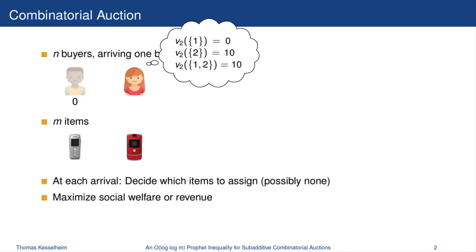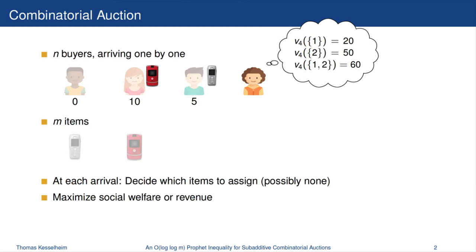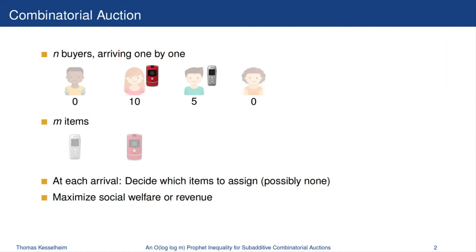This second lady has a value of 0 for the first item, a value of 10 for the second item, and also a value of 10 for both items together. So let's give her the second item. Now our social welfare is already 10. This third guy has a value of 5 for either the first or the second item, or also for both items together. So let's give him the first item and now we have a social welfare of 15. Now this lady shows up and she would have a value of even 60 for both items together. But unfortunately both items are already allocated, so we cannot give her anything. So now we have only a social welfare of 15.